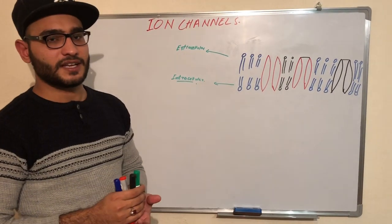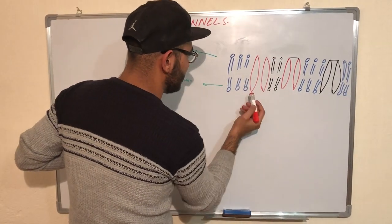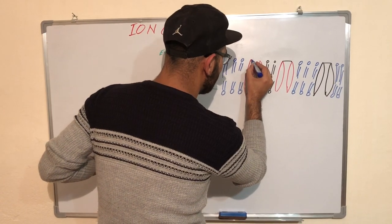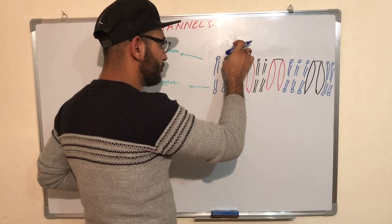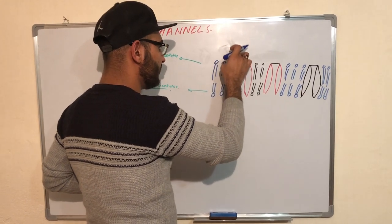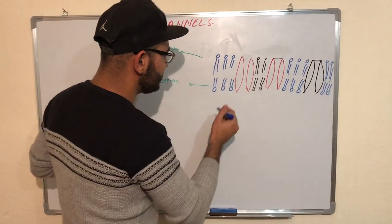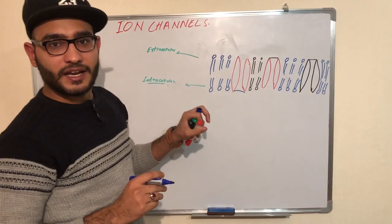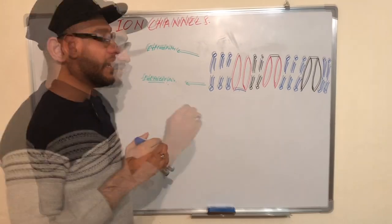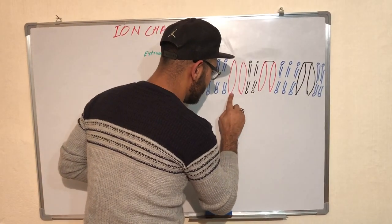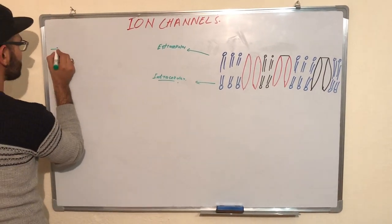For entry into the cell, it is necessary to have a specific gate. This one is the extracellular membrane and this one is the intracellular membrane. If the extracellular membrane is closed by a specific gate, no entry will occur of neurotransmitter, no entry of a drug, no entry of ions. And if the extracellular gate is open but closed from inside, it is also not entered into the cell. So it is necessary that this gate should be open from both sides.